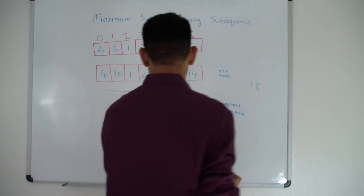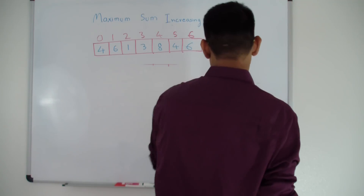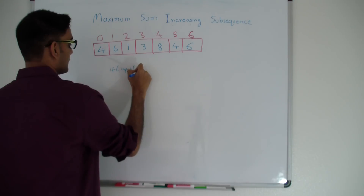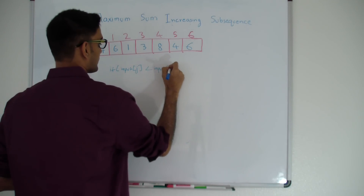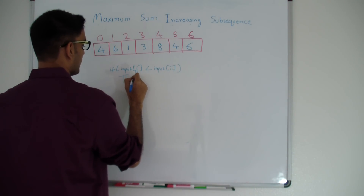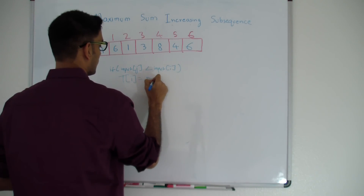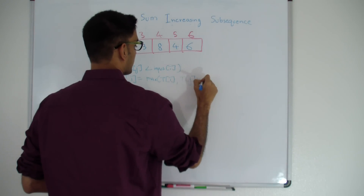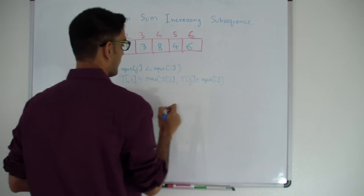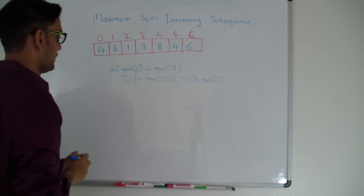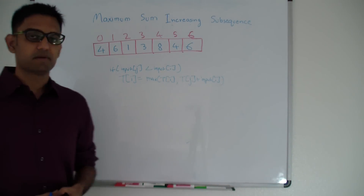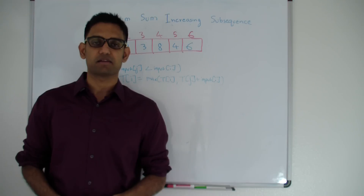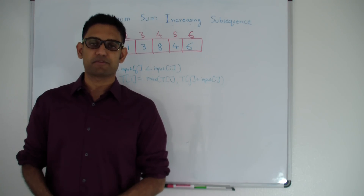The formula for this question: if input at j is less than input at i, then t[i] = max(t[i], t[j] + input[i]). Otherwise we don't update. If you want the full solution, go to my GitHub at github.com/mission-peace/interview-wiki. For similar questions, check out my YouTube channel at youtube.com/user/tusharwright2525. Thanks for watching.